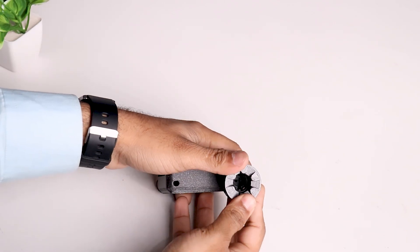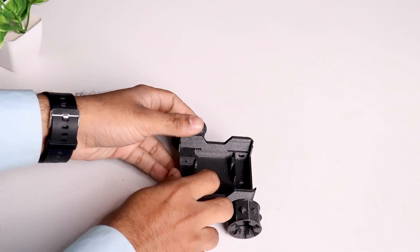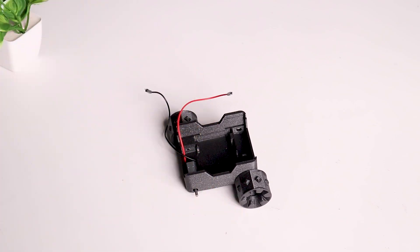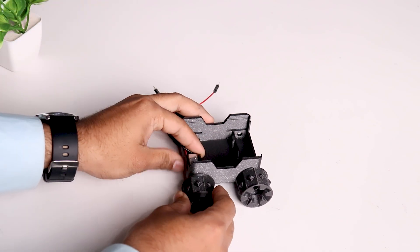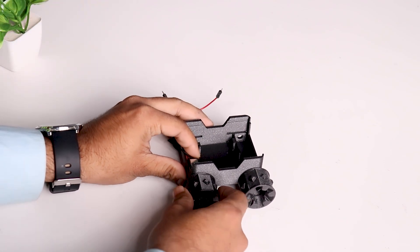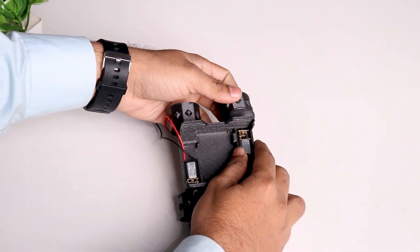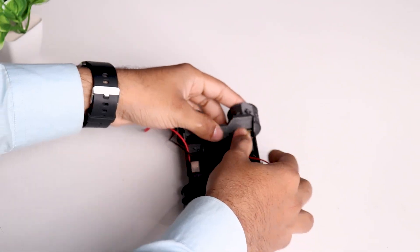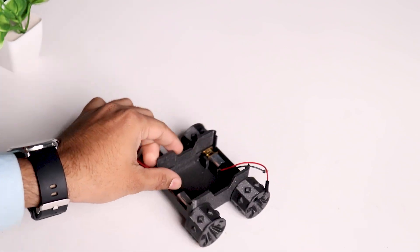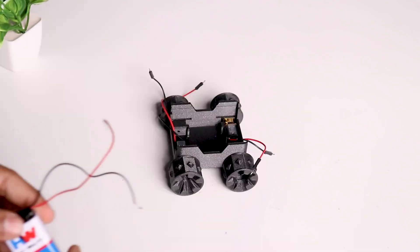Now let's connect the wheels to the chassis and motors to the wheels. There are 2 master wheels and 2 slave wheels. Master will be connected to the motors and slave will be connected to the chassis body. This is what the body will look like after connecting the wheels.